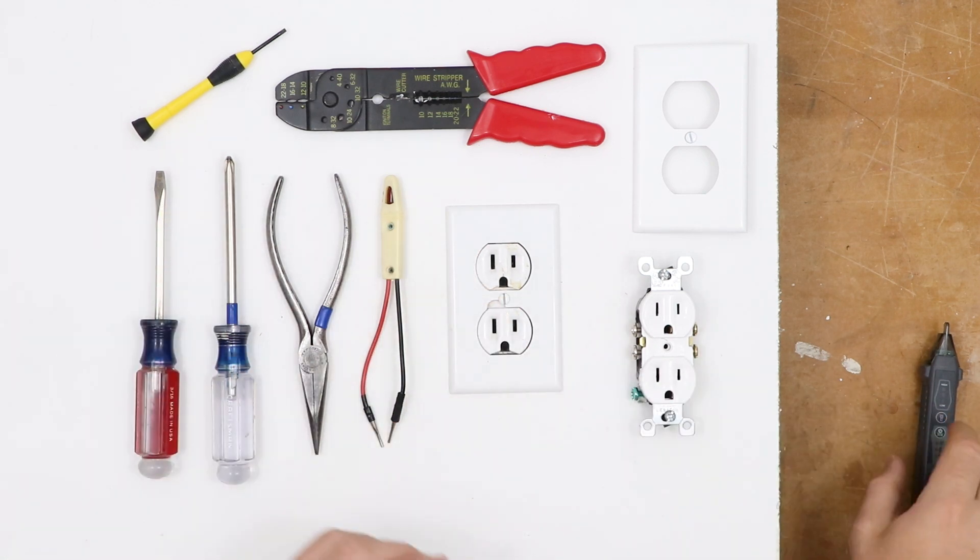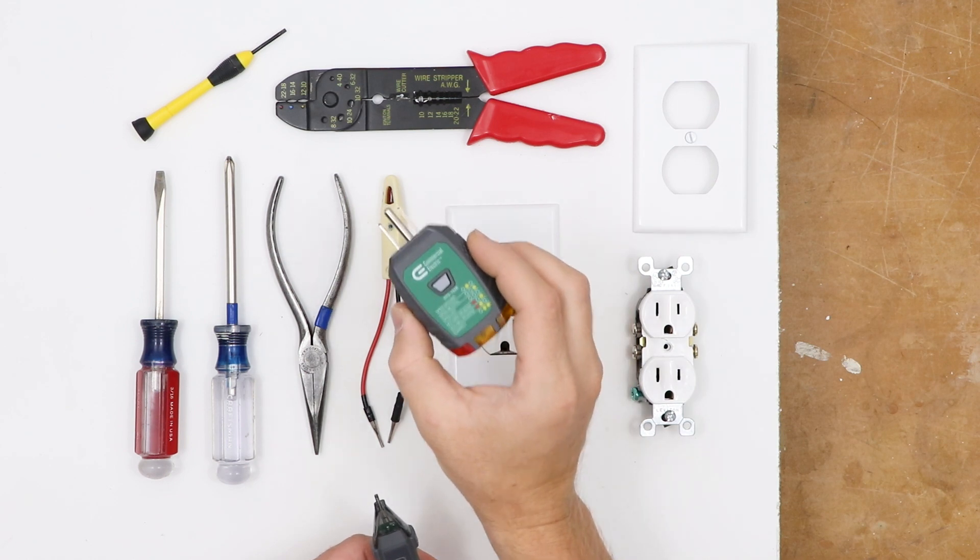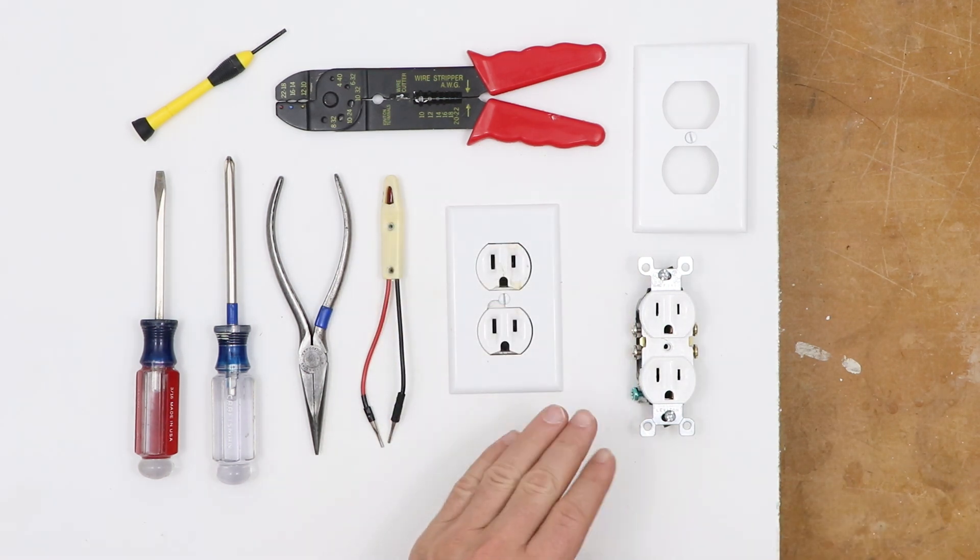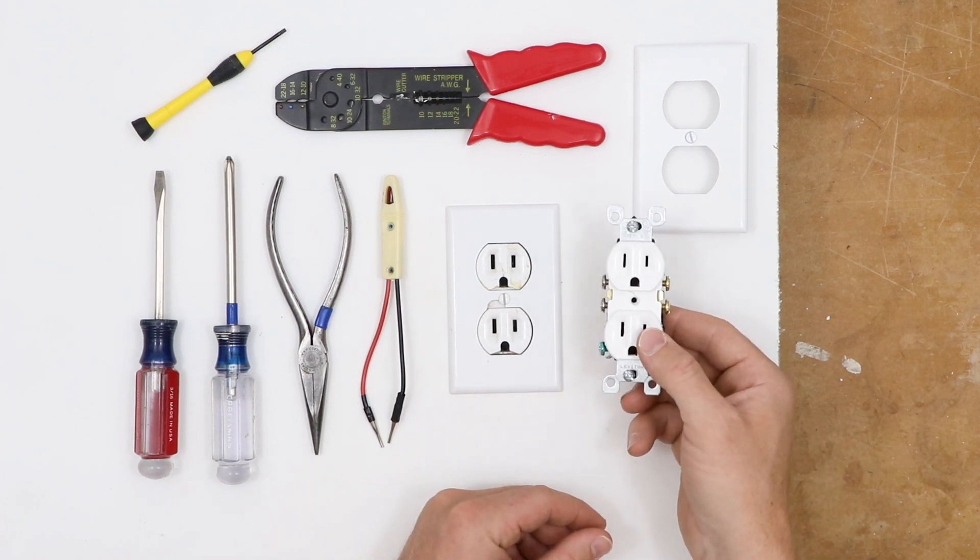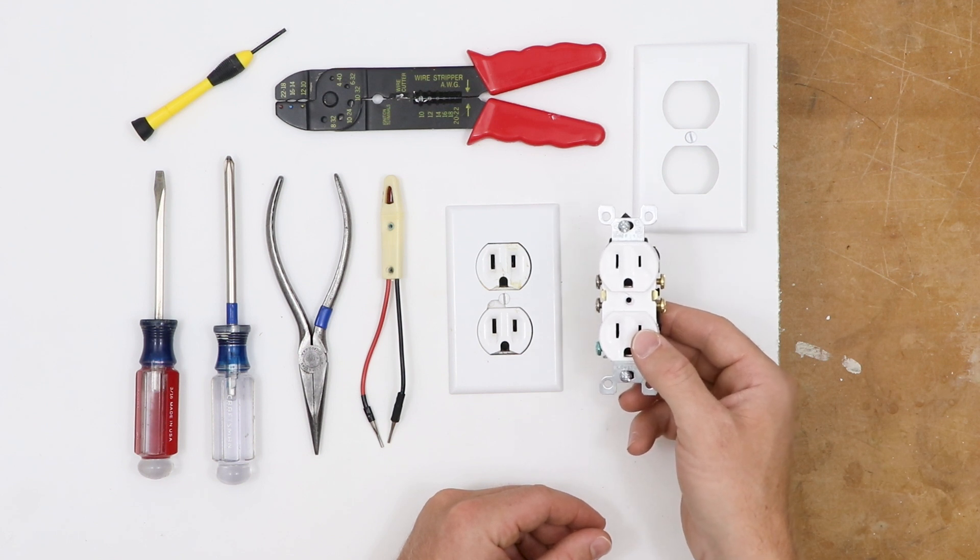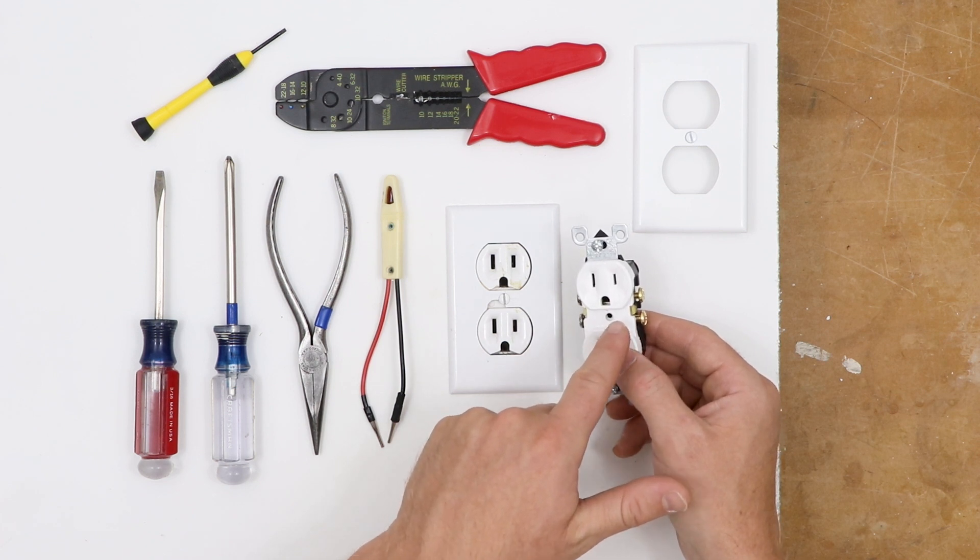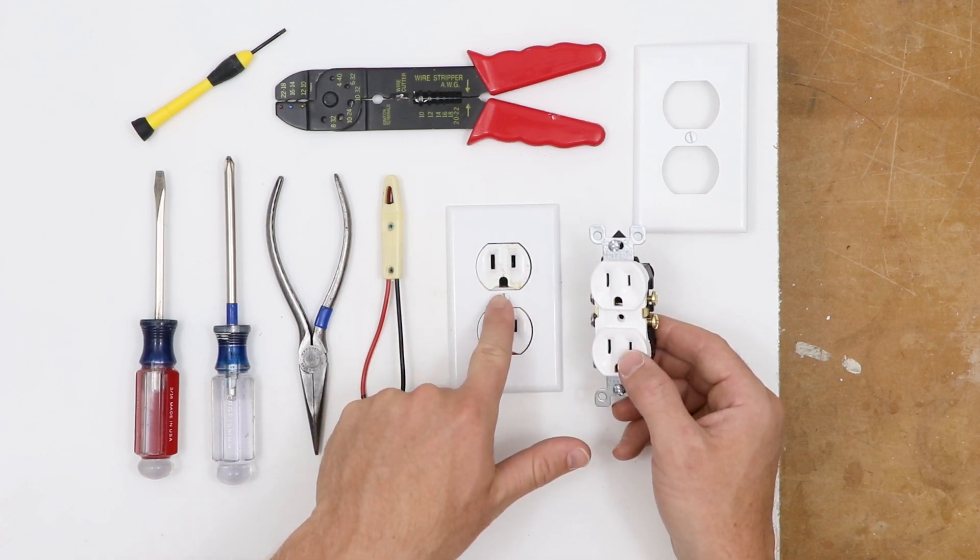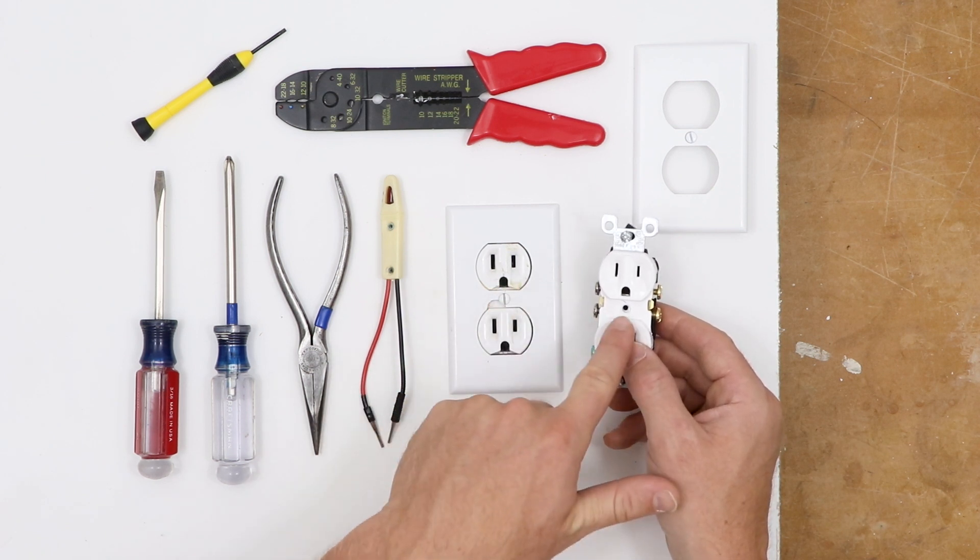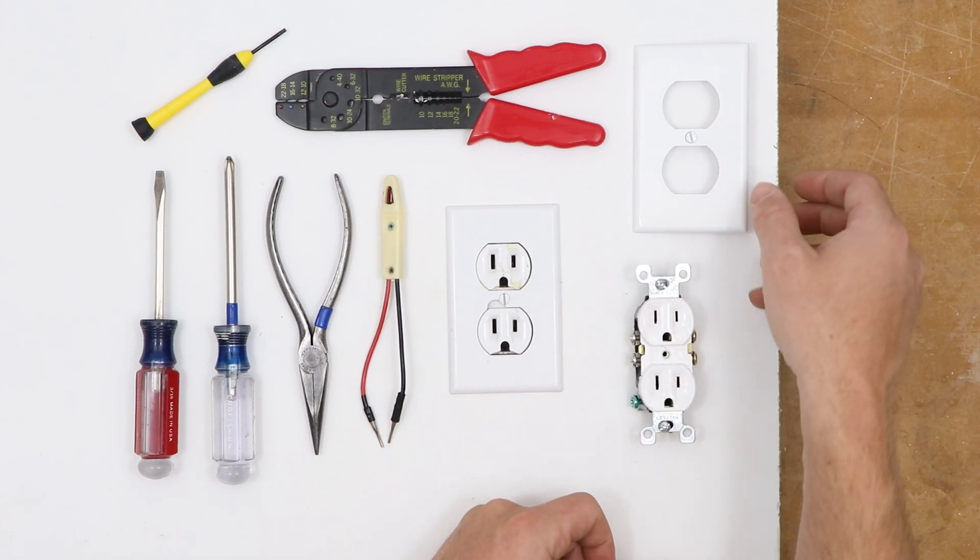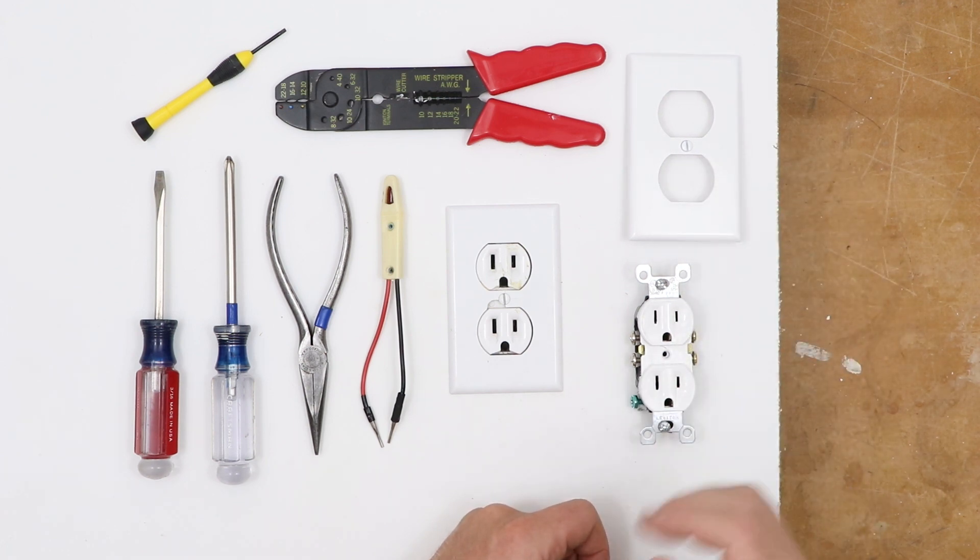Additional tools that are worth mentioning are a non-contact voltage tester as well as a receptacle tester. You'll want to pick up your supplies before starting the project. You're going to want an outlet that is equivalent to the one you're removing, equivalent in the number of outlets, the outlet style, as well as the ratings. Here we have a three slotted design that is rated for 125 volts and 15 amps. That's exactly what I purchased at the hardware store. As well, if you're going to replace the receptacle, get yourself a new wall plate because you might as well replace that at the same time.